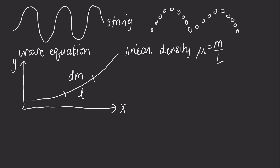We can assume there are two forces of equal magnitude acting on each end of the string element — F1 on the left and F2 on the right. There needs to be a tension force along the string pulling each element into the wave shape, otherwise the wave couldn't travel through the string. The magnitude of F1 equals the magnitude of F2, which equals τ, the tension along the string.